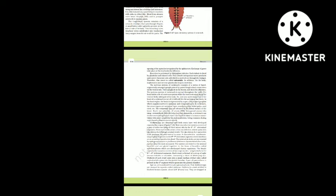Cockroaches are dioecious and both sexes have well-developed reproductive organs. The male reproductive system consists of a pair of testes, one lying on each lateral side in the 4th to 6th abdominal segments. From each testis arises a thin vas deferens, which opens into the ejaculatory duct through the seminal vesicle. The ejaculatory duct opens into the male gonopore situated ventral to the anus. A characteristic mushroom-shaped gland is present in the 6th to 7th abdominal segments, functioning as an accessory reproductive gland.